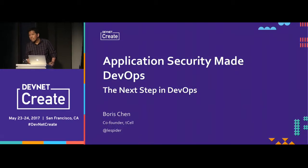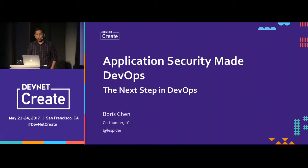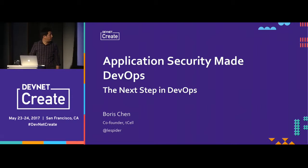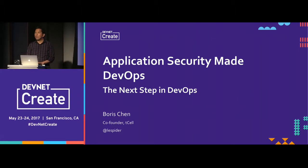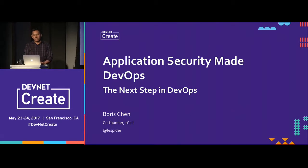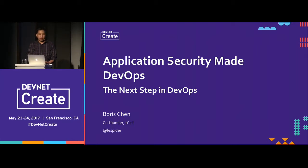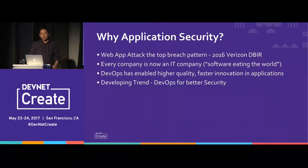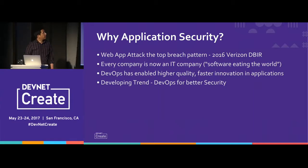Thanks for staying. This talk is about application security meets DevOps. My name is Boris Chen. I work at a startup called T-Cell, based here in San Francisco. We do application security at runtime. I'm going to talk more generally about how application security plays into DevOps and how DevOps is essential for strong application security. Web app attacks are actually the top breach pattern, according to Verizon's 2016 DBIR. Every company now is an IT company of some sort — software is eating the world.